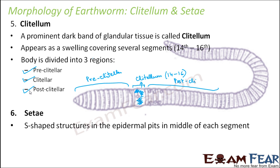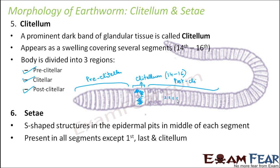Setae are S-shaped structures located in epidermal pits in the middle of each segment. If you look at the underside of the earthworm, small S-shaped structures are present. They arise from the epidermis — almost from the skin. These thin hair-like S-shaped structures are known as setae and they help in locomotion. They are present in all segments except the first, the last, and the clitellum.